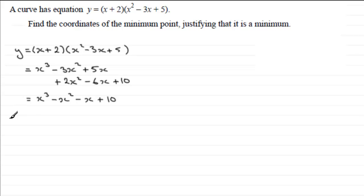So we can go on now and therefore get dy by dx. Differentiate y with respect to x. And so if you differentiate x cubed with respect to x, you get 3x squared. Differentiate minus x squared, you get minus 2x. And differentiate minus x, you get minus 1. And the constant 10, well, that goes to 0.